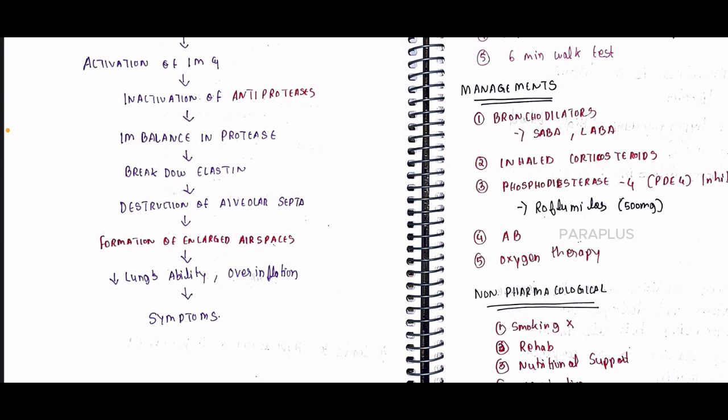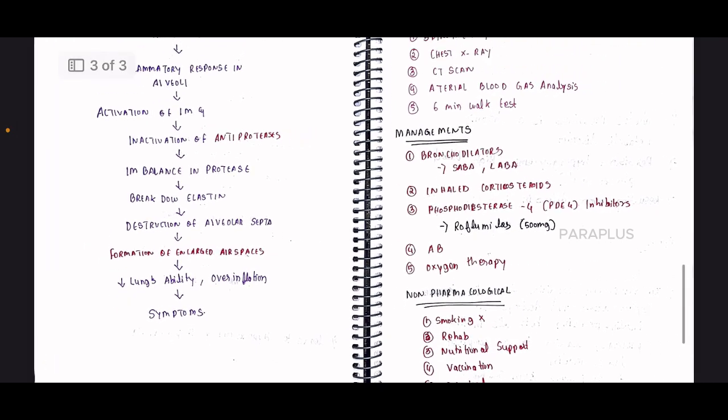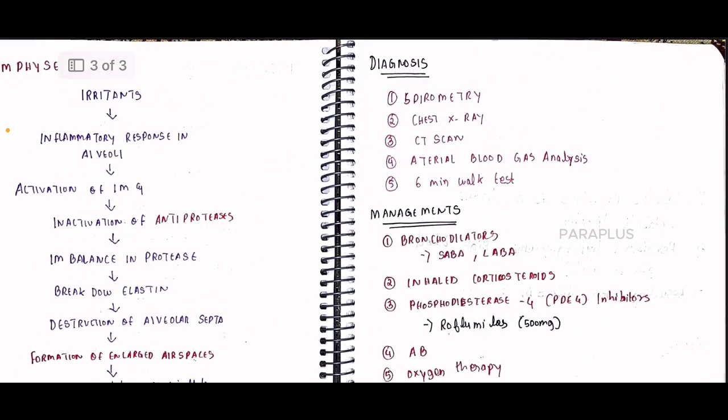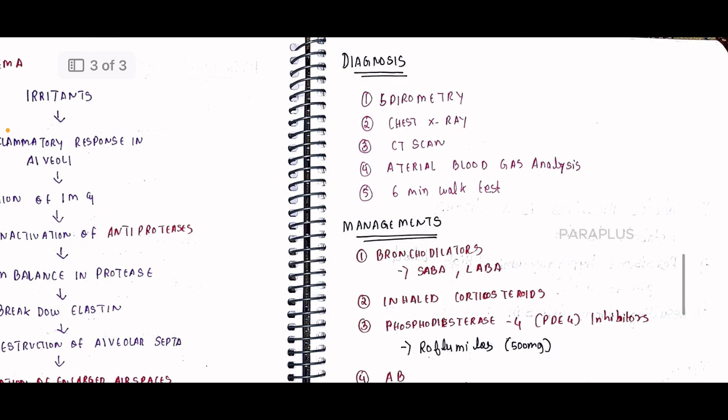Diagnosis of COPD includes spirometry — where the patient inhales and exhales to measure lung capacity — as well as chest X-ray, CT scan, and arterial blood gas analysis.